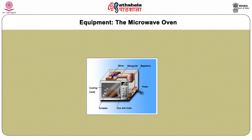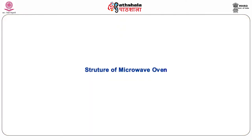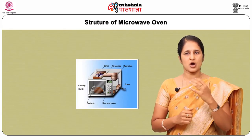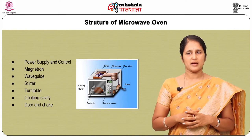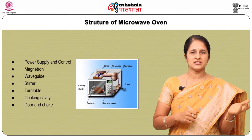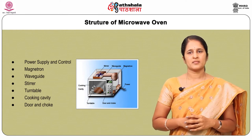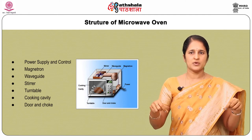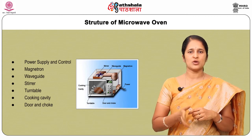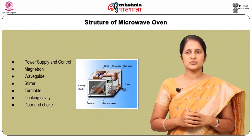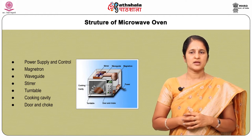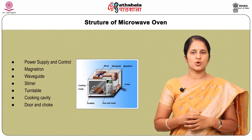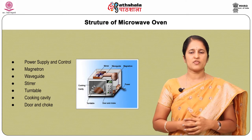Let's discuss the structure and important parts of the microwave oven. The microwave oven generally consists of basic components: a power supply, which controls the power fed to the magnetron; a magnetron, which is a vacuum tube where electrical energy is converted to an electromagnetic field; and a wave guide, which is a rectangular metal tube that directs the microwaves generated from the magnetron to the cooking cavity, preventing direct exposure of the magnetron to food particles.